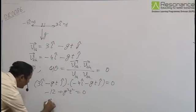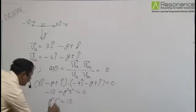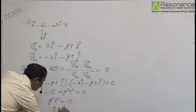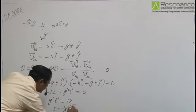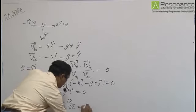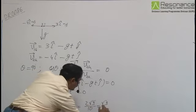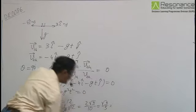Or we have g square t square equals 12. Or t equals 1 by g root 12. If we put the value of g, then it is 2 root 3 by 10 or root 3 by 5 seconds.